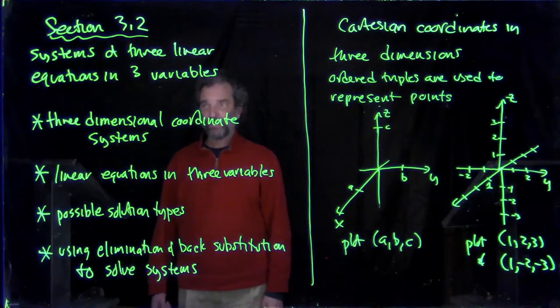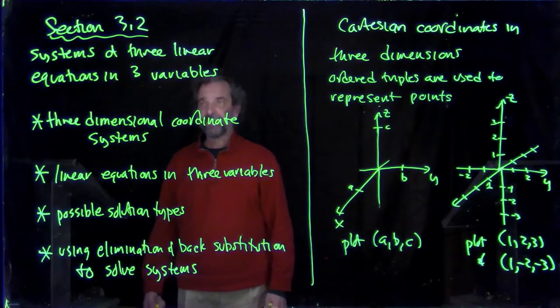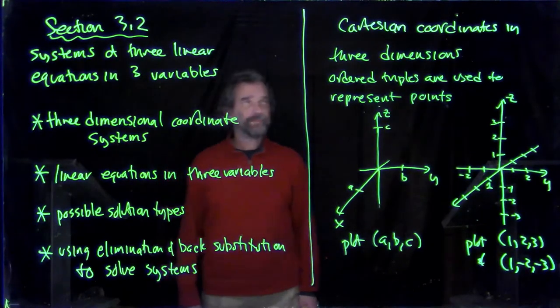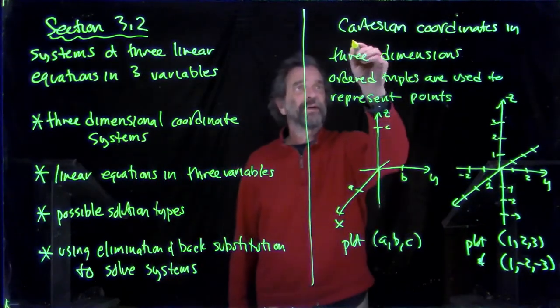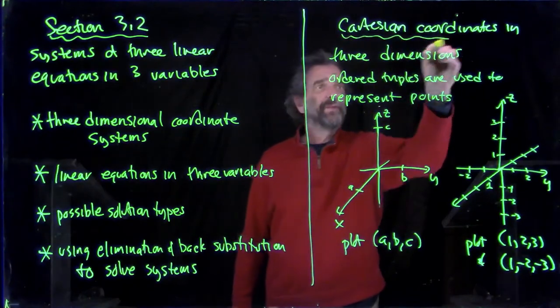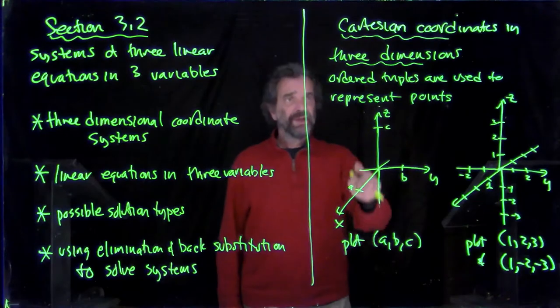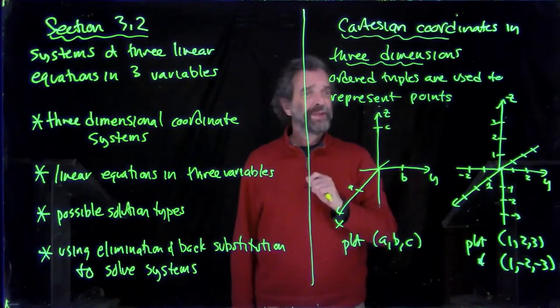We'll get started right away with the three-dimensional coordinate system. It helps us visualize what's going on with these systems of equations. So here we go. We'll talk about the Cartesian coordinates in three dimensions. It says here, ordered triples are used to represent points.